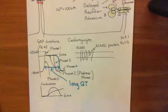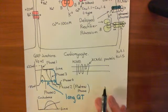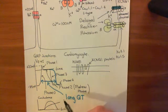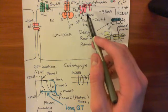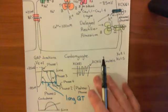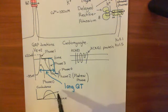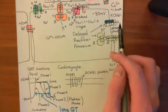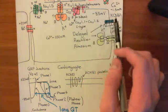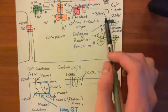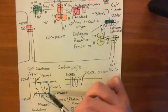So what causes Long QT Syndrome? Basically, it's mutations in these delayed rectifier potassium channels. Because remember, what causes this repolarizing portion of the cardiac action potential is that the voltage-gated calcium channels here in pink start closing — their conductance starts going down, so the movement of positive charge into the cell gets smaller. Meanwhile, the delayed rectifier potassium channels' conductance of potassium out of the cell is going up, causing phase 3 repolarization.